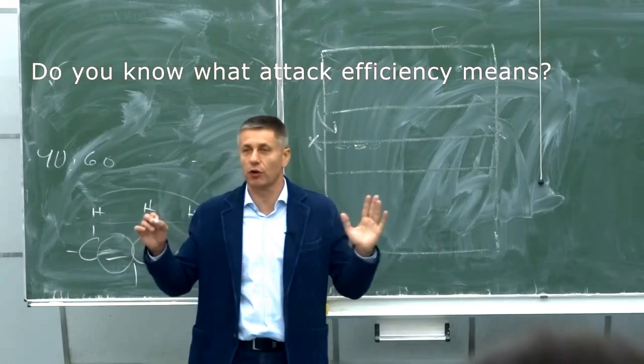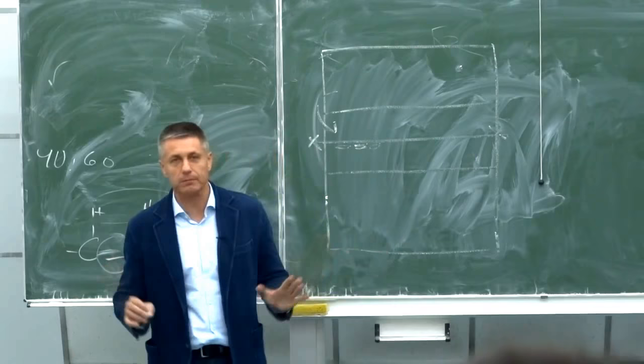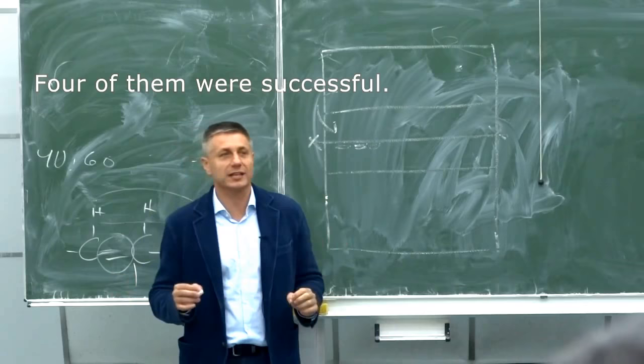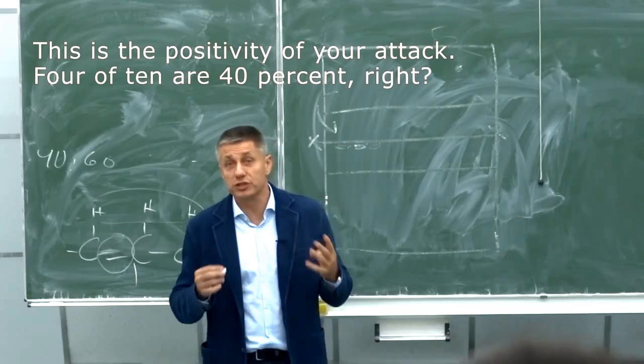Ефективност — всички елементи трябва да са по този начин. Имате 10 отиграни топки, 10 разиграни за атака. От тях сте отиграли 4. 4 точки сте направили директно. Това е позитивност на вършна атака.